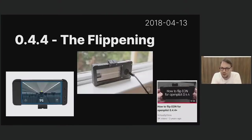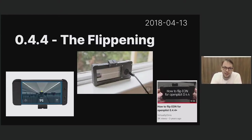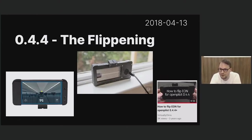Version 0.4.4 was the big 'flippening.' When we designed the original EON, we put the selfie camera on the right side of the device — which turned out to be a mistake. When we wanted to start gathering driver monitoring footage, we wanted the camera on the left. Luckily the EON case was symmetrical, so with a hex screwdriver you could take it apart, flip the mount around, and put it back in your car. Chris even made a nice video about it. This was the first step towards driver monitoring, which is very important.